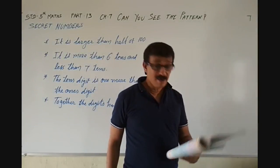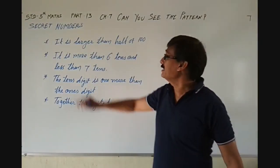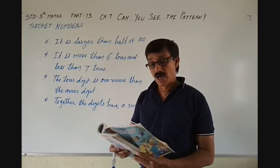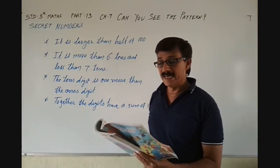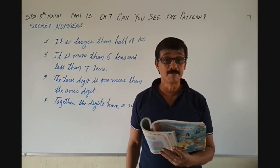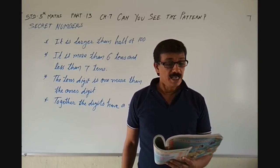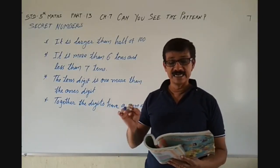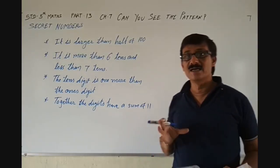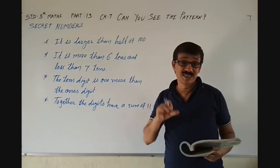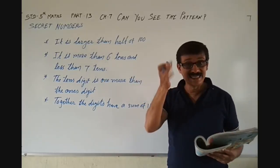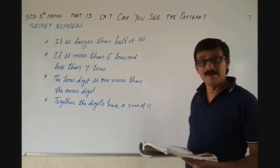Now, open page number 110. Let's see some secret numbers. First of all, let's read the textbook. Banno and Binoad were playing a guessing game by writing clues about a secret number. Each tried to guess the other's secret number from the clues. They were giving clues so that the other could find out that secret number by guessing.